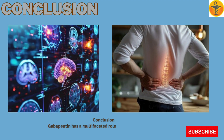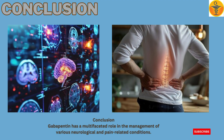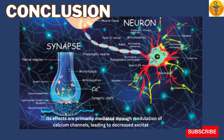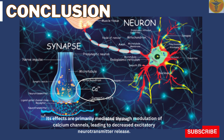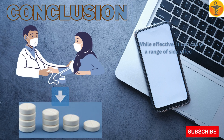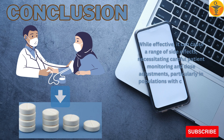Conclusion. Gabapentin has a multifaceted role in the management of various neurological and pain-related conditions. Its effects are primarily mediated through modulation of calcium channels, leading to decreased excitatory neurotransmitter release. While effective, it can cause a range of side effects, necessitating careful patient monitoring and dose adjustments, particularly in populations with comorbid conditions or those taking concurrent medications.